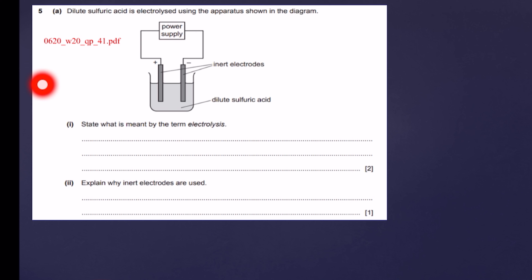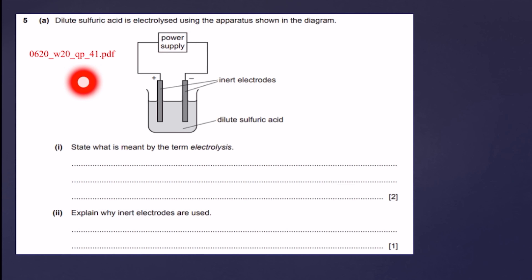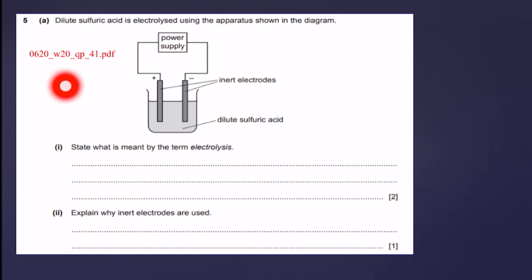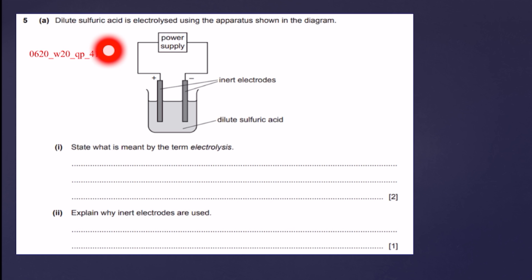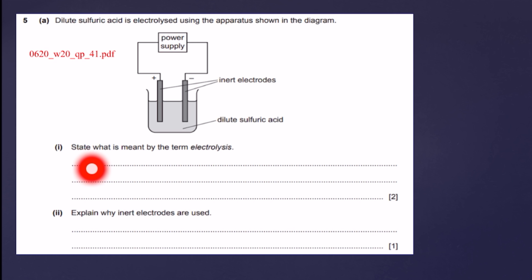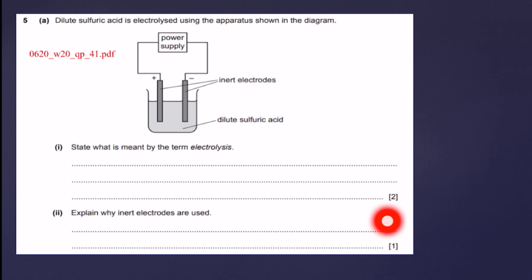This question is from November 2020 question paper 4 variant 1. The question is about electrolysis of dilute sulfuric acid — question number 5. Dilute sulfuric acid is electrolyzed using the apparatus shown in the diagram. State what is meant by the term electrolysis. Let us see how two marks are exactly given to your answer.